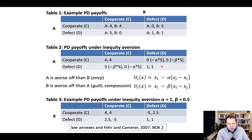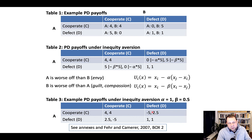We also care about how unfair outcomes are for us. Instead of a utility of zero when we receive nothing, we actually have a negative utility, because there's an additional weight for inequity aversion that applies when the other person receives more than us. If we assume that weight is one, and we cooperate while the other defects, our utility becomes negative five. This changes the payoff matrix considerably and makes defection less attractive, such that cooperation becomes the more attractive outcome for people with these inequity aversion parameters.